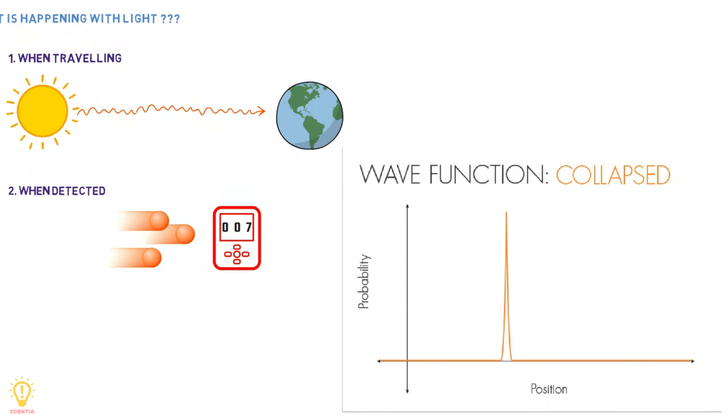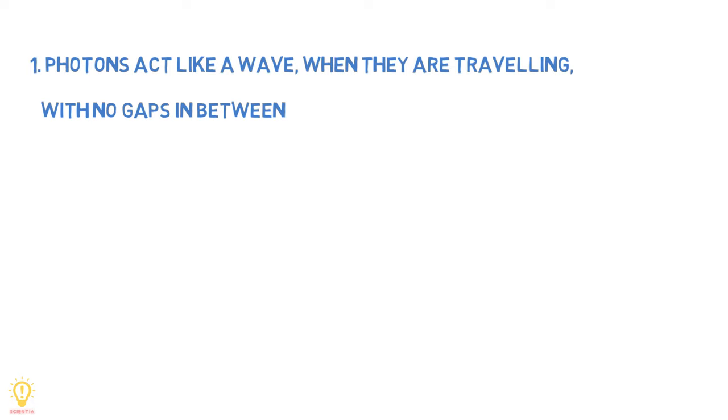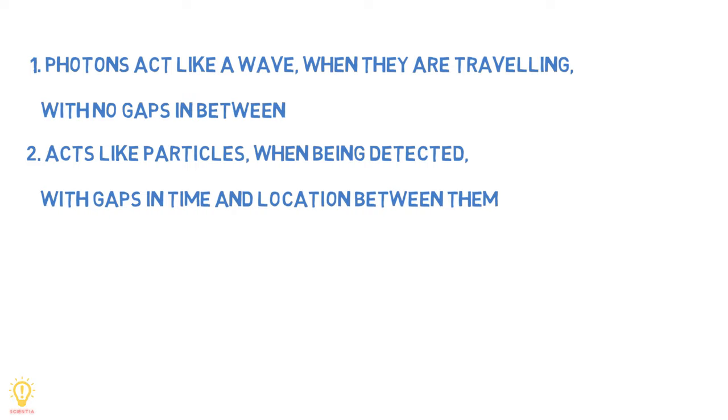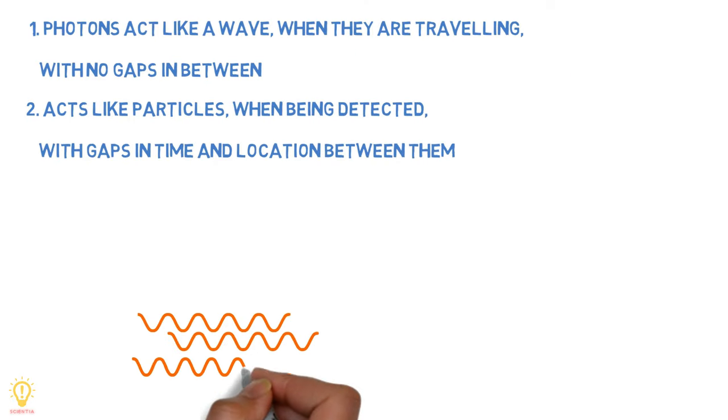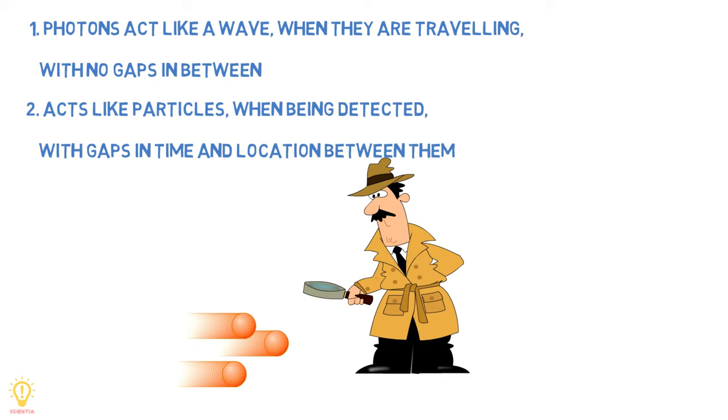Photons act like a wave when they are traveling, with no gaps in between, and act like particles when being detected, with gaps in time and location between them. The act of detecting the light causes light to collapse from wave-like to particle-like, and therefore introduces gaps between them.